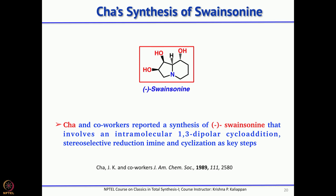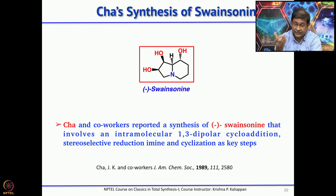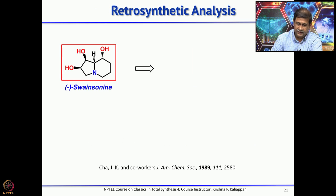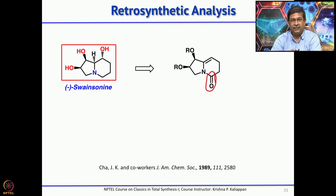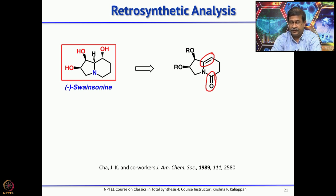As soon as the imine is reduced, it cyclizes to form a lactone. The retrosynthesis again starts similarly with formation of the lactam, which can be easily reduced. At the same time there is a double bond — one can do hydroboration to introduce the hydroxyl group. This particular retrosynthesis involves two key reactions: removal of the lactam to the corresponding 6-membered piperidine, and hydroboration of the double bond to give the corresponding hydroxyl group.